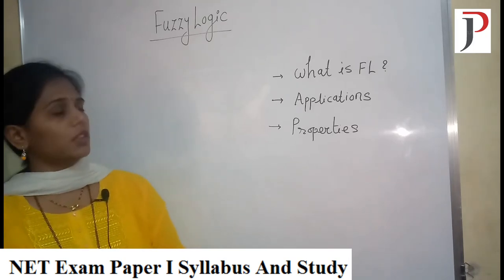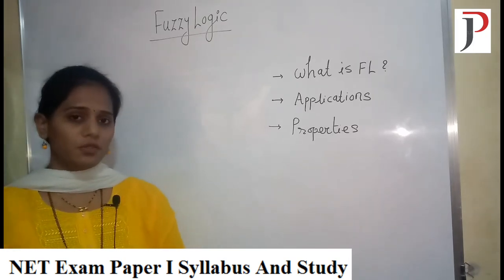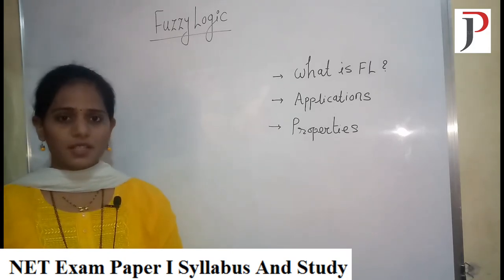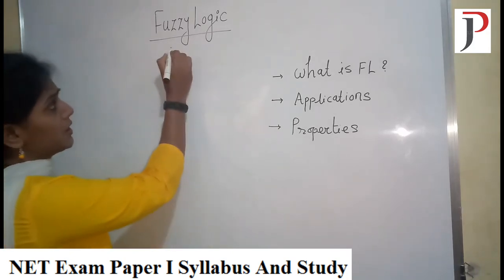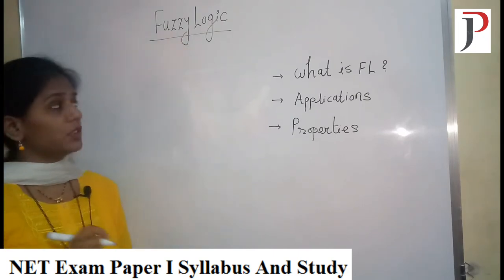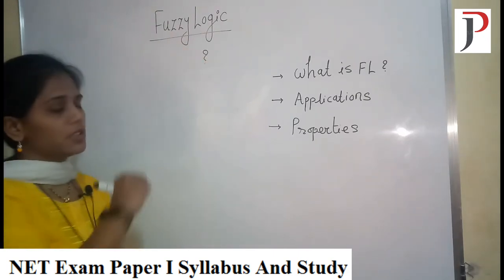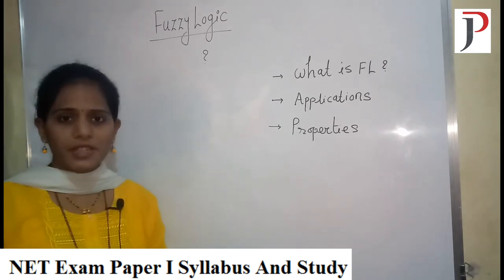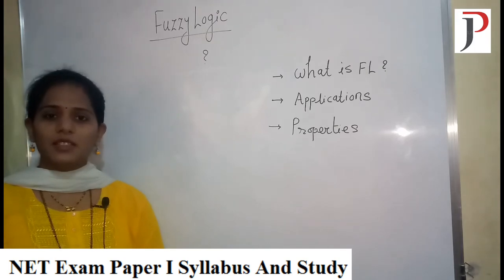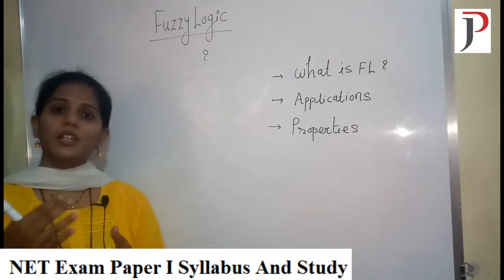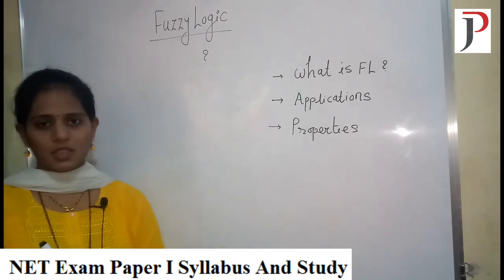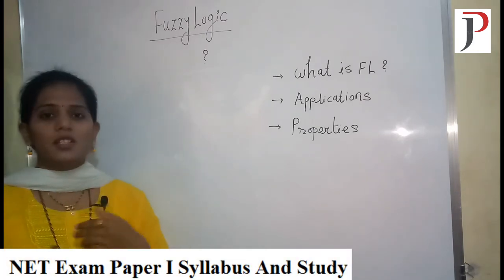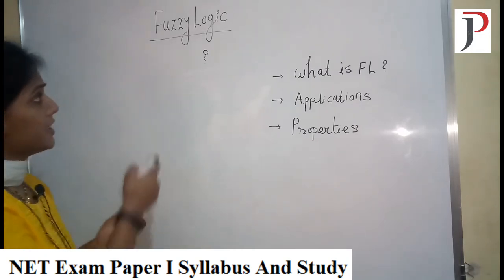This term was first discovered by the famous philosopher Lotfi Zadeh in 1965 in his paper 'Fuzzy Set'. This term is basically made up of two words: fuzzy and logic. The word 'logic' we also use in our everyday life — for example, 'is there any logic behind this?' means we are trying to get the reason behind things. In simple words, logic means reason, and fuzzy logic is the logic of reasoning.